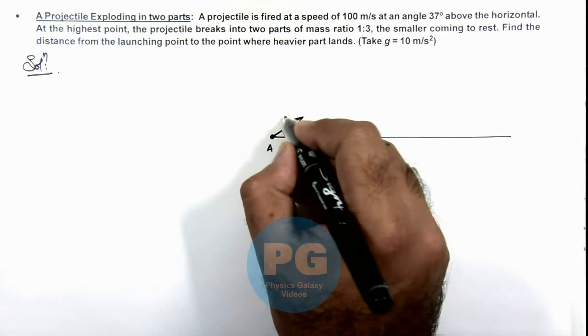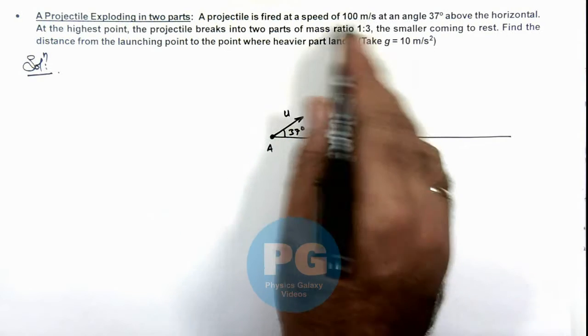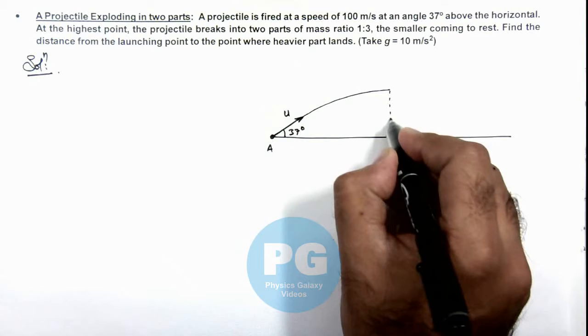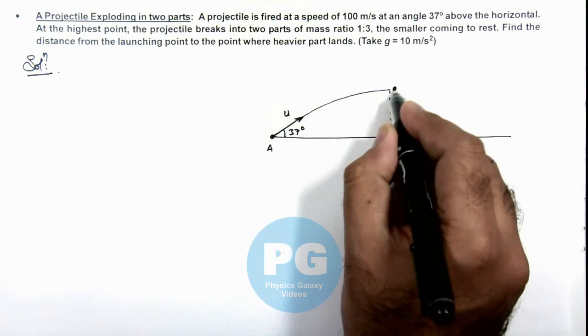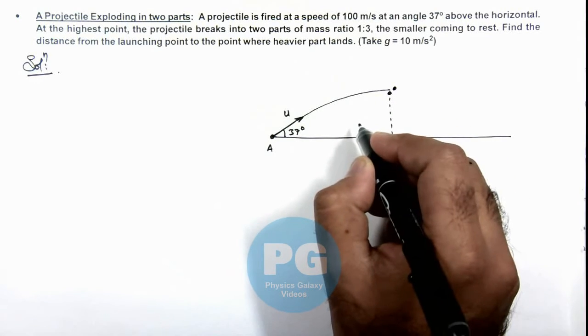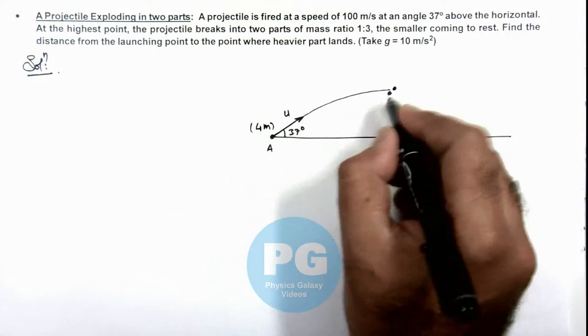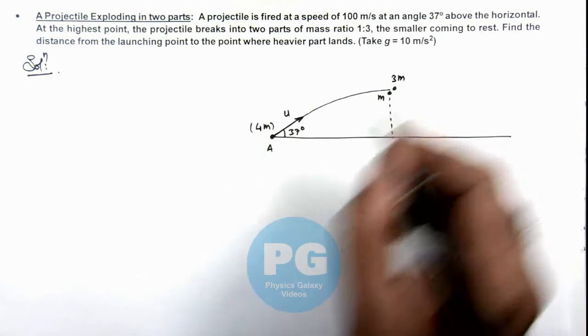And at a speed of u which is given as 100 meters per second. Then in its projectile motion at the highest point of trajectory it explodes in 2 parts. Say if the total mass of projectile is taken as 4m, one part is of mass m, other is of mass 3m.